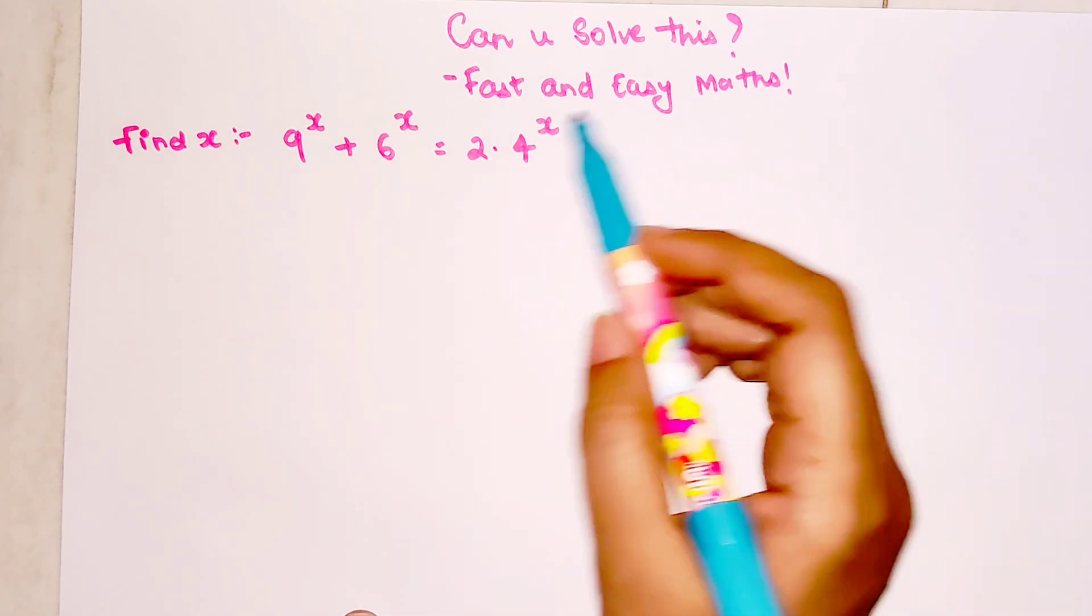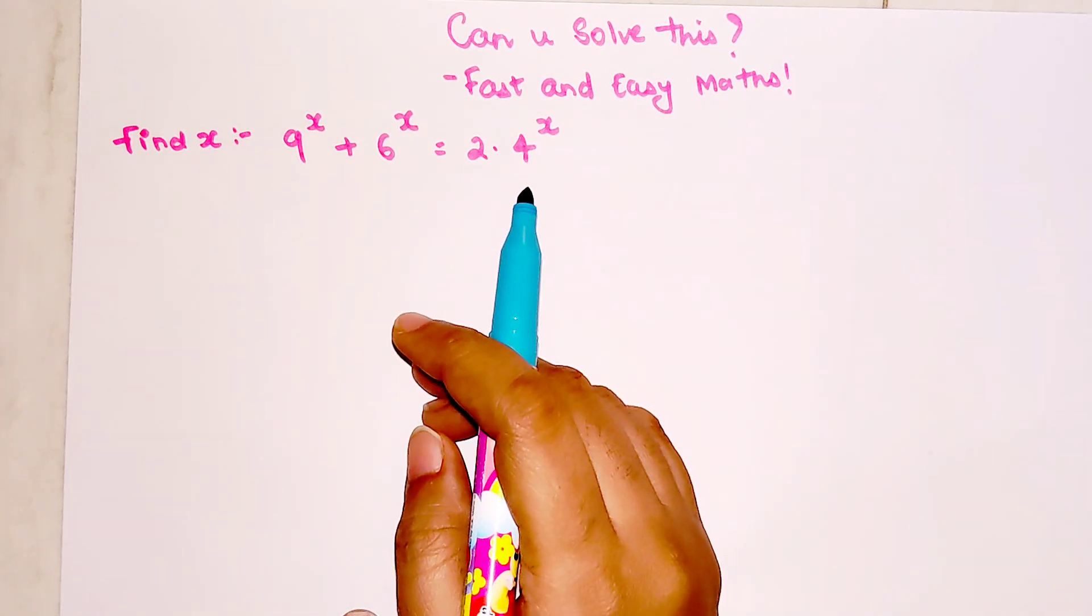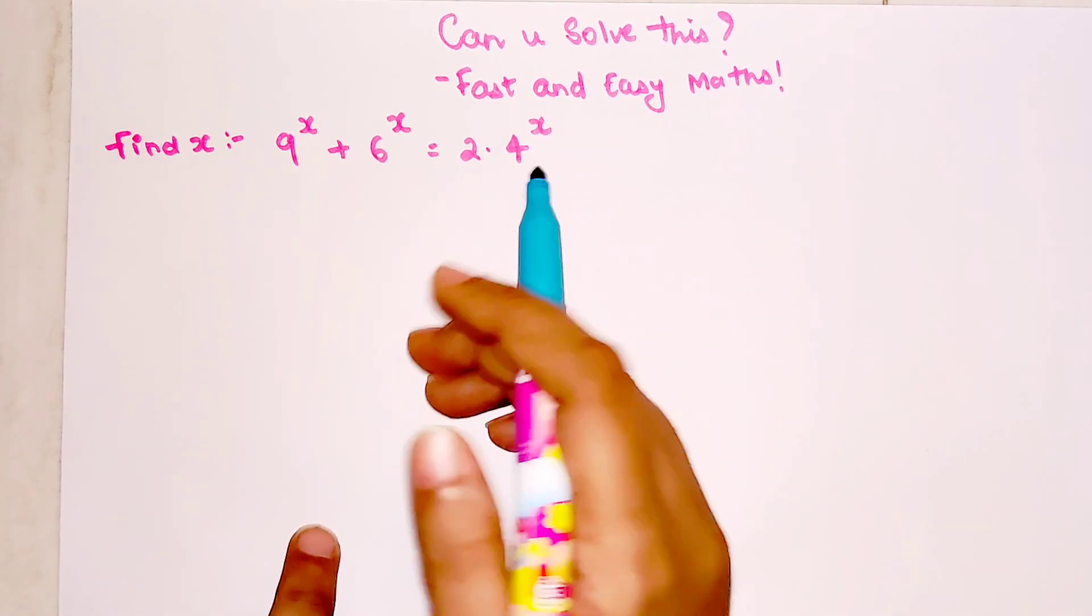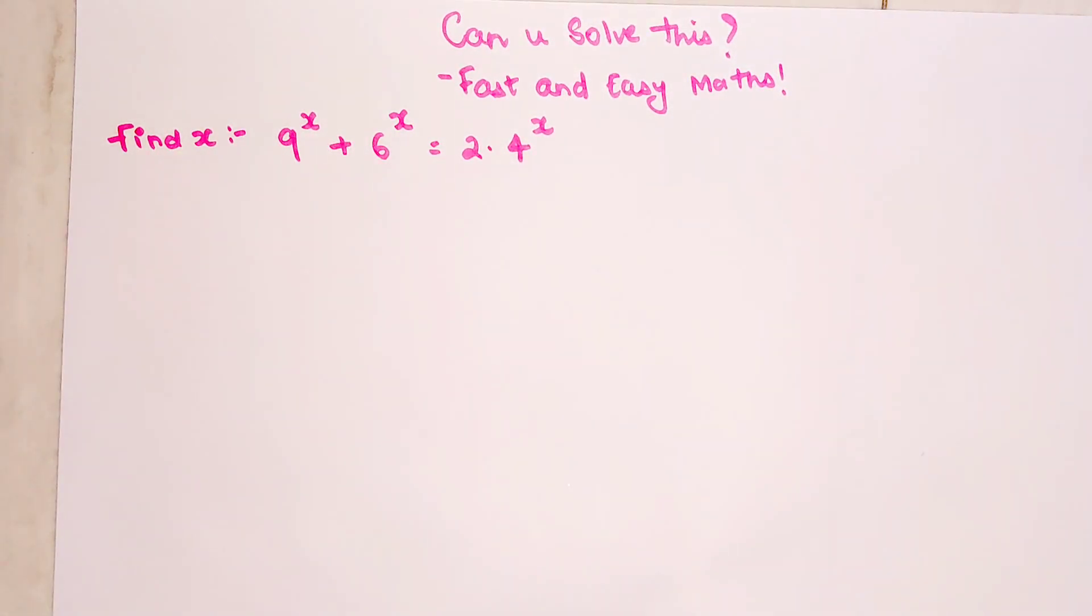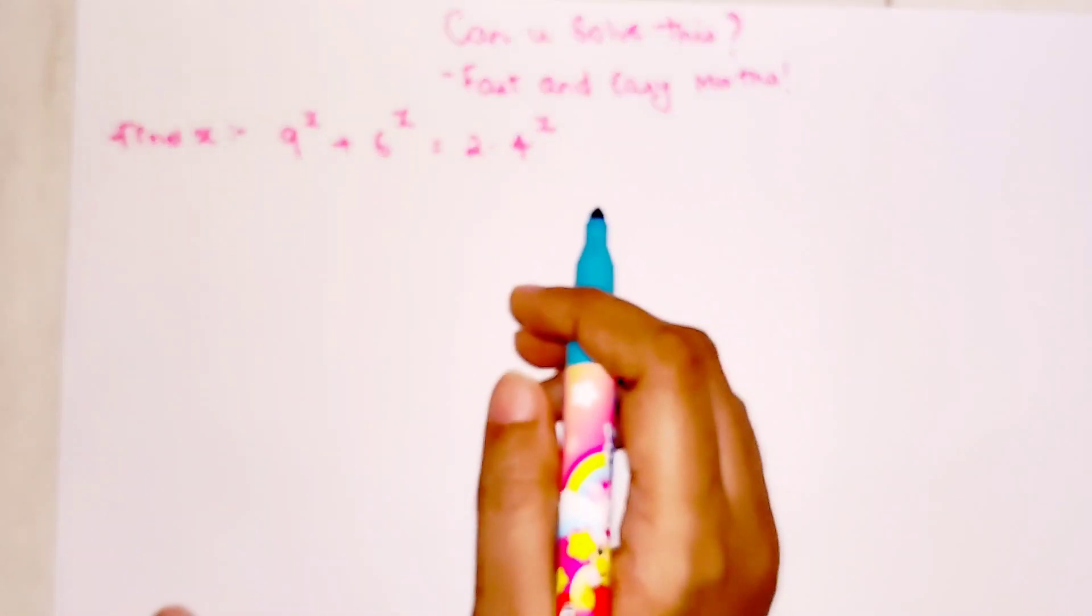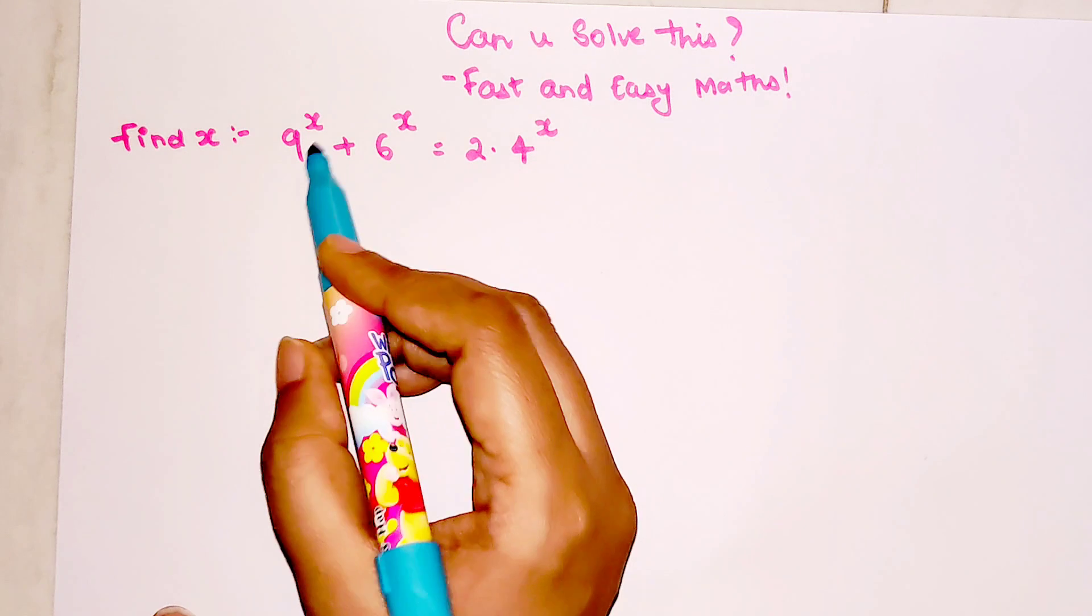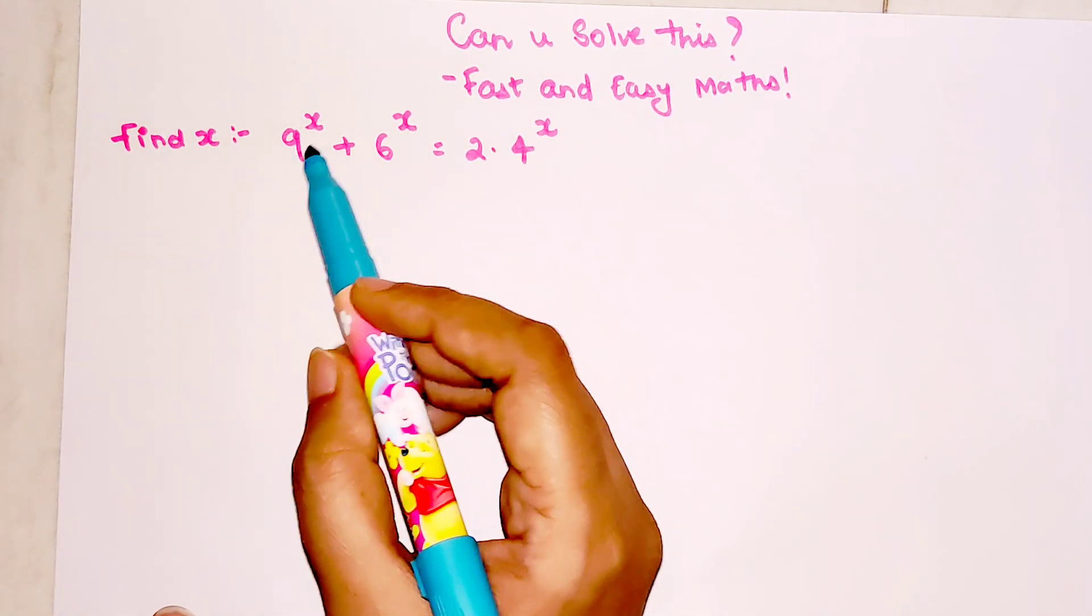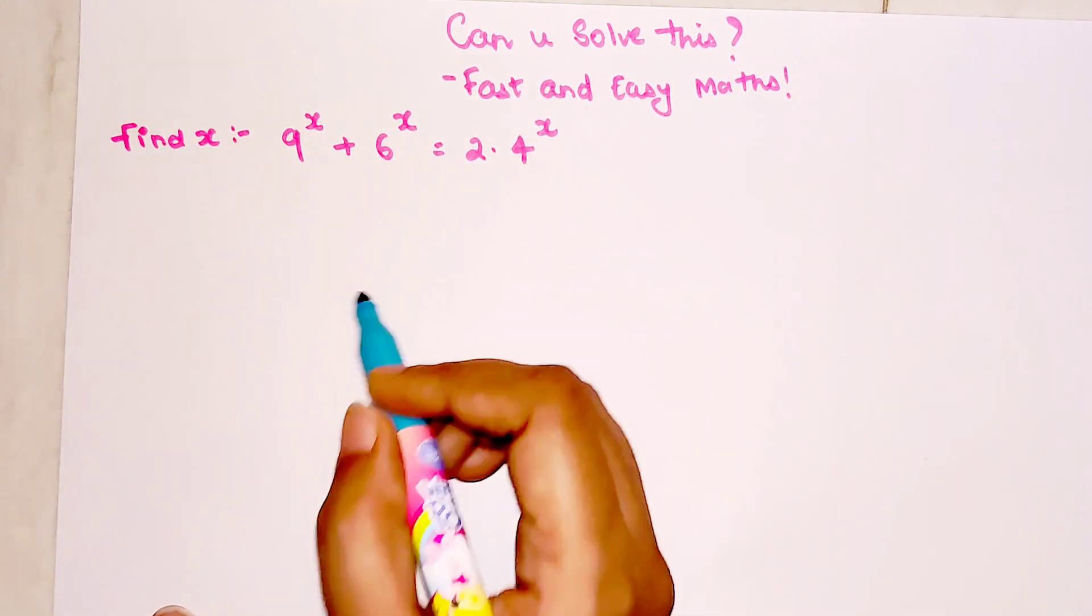Welcome everyone to my channel, Fast and Easy Maths, which is dedicated to give you tips and tricks related to mathematics. Today we are going to solve a question which was posted to me as a comment or email. The question is very interesting. Find the value of x where the equation given is 9^x + 6^x = 2·4^x.